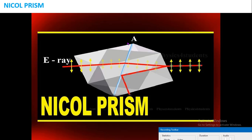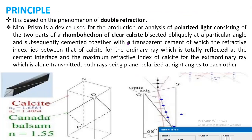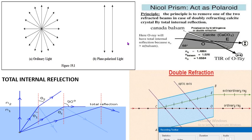Before knowing about the Nicol prism, we should know about the properties of light. Light can be of two types: ordinary ray and plane polarized light. Ordinary light, otherwise known as unpolarized light, consists of light rays of different wavelengths vibrating in all possible planes perpendicular to the direction of propagation. Polarized light waves are waves in which the vibration occurs in a single plane — polarized light travels in only one plane direction, but ordinary light travels in all directions.